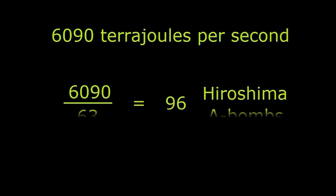Now, the Hiroshima bomb went off at 63 terajoules. So dividing that into 6,090, we get 96 Hiroshima-type bombs per second going off in our engine.